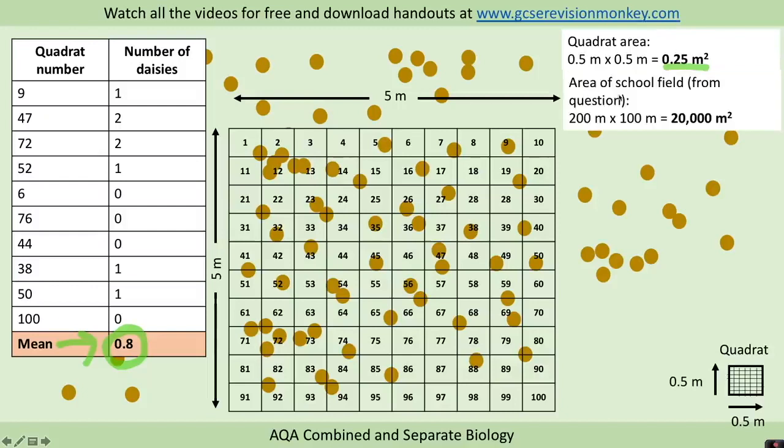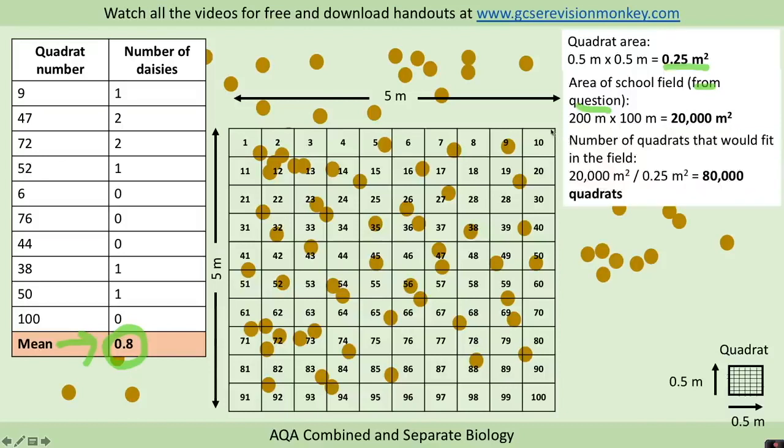We need to know the area of the school field. So given in the question, it was 200 metres by 100 metres. So 20,000 metres squared. The next thing that you need to work out is the number of quadrats that would fit in the field. So we've got the area of our field divided by the area of one quadrat and that gives us 80,000 quadrats.